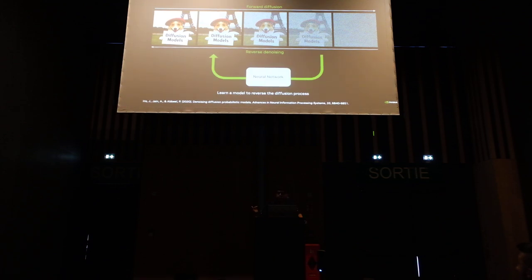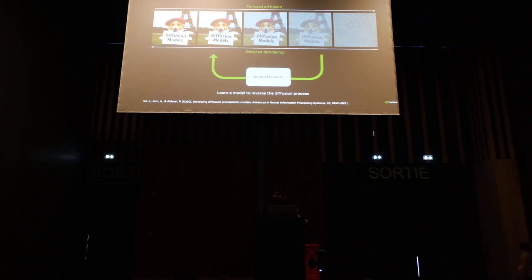At a higher level, the way diffusion models work is using this diffusion process. We start with a clean data distribution and then we gradually add noise to this. Once we add noise, you're going to get a noisy data distribution. We add enough noise till you get a complete noise distribution — this is the forward diffusion process. What we want in the diffusion model is to reverse this process, and usually we use a neural network to learn this reverse process. Once a neural network is trained, we can generate samples by starting with the noise and then gradually denoise it till you get a clean image.